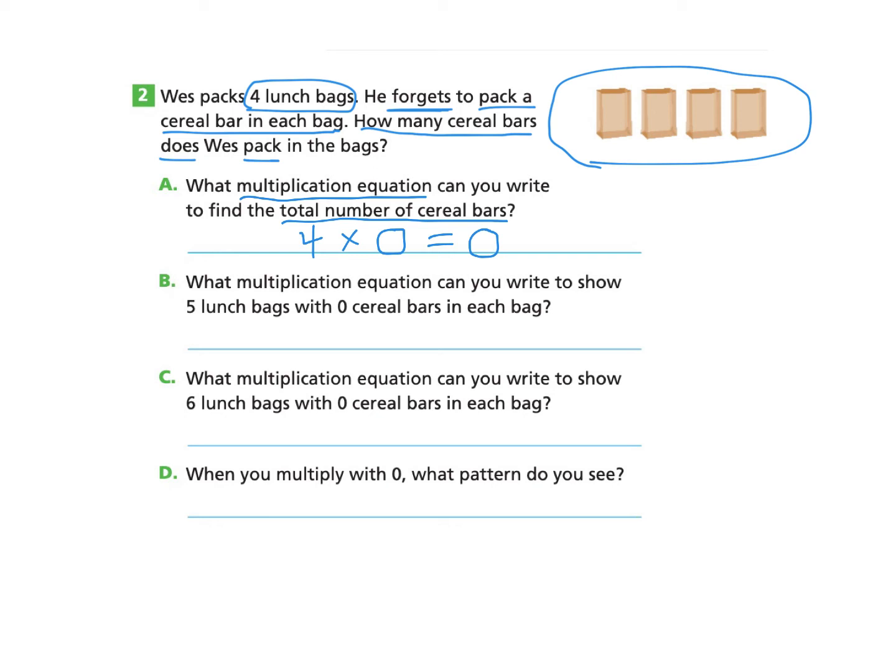Part B, what multiplication equation can you write to show 5 lunch bags with 0 cereal bars in each bag? Again, you can pause and try this on your own and then come back. There are 5 lunch bags, and in each lunch bag, there are 0 cereal bars. So if we added another lunch bag here and it didn't have a cereal bar inside it, there would be a total of 0 cereal bars.